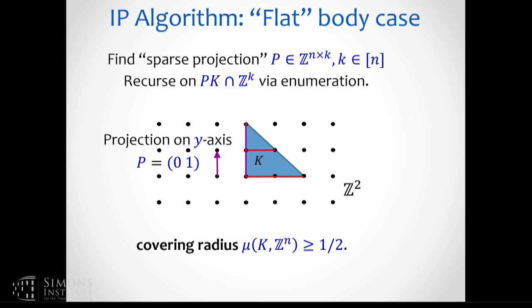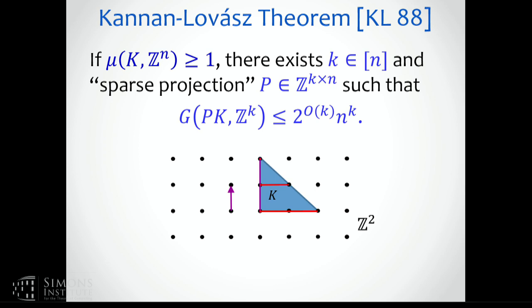Kannan and Lovász show that in the flat case, you can find a projection onto some k-dimensional space such that the worst-case number of lattice points in any shift of this projection is essentially 2 to the k times n to the k. Notice this grows with k, but that's okay — if I enumerate this, I kill off k dimensions of the problem. This is basically creating roughly n sub-problems per dimension.